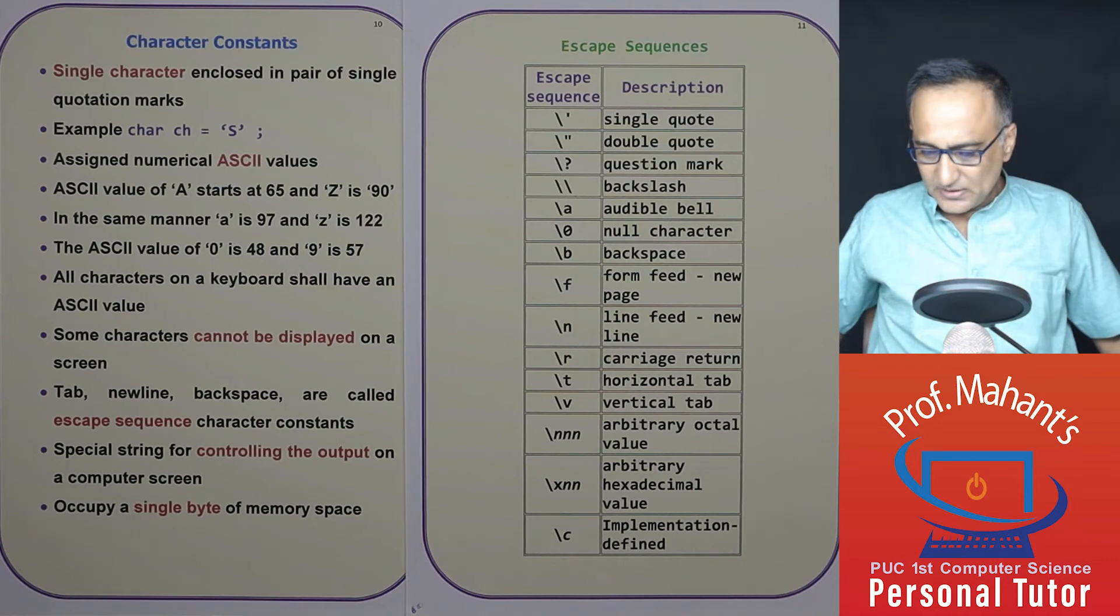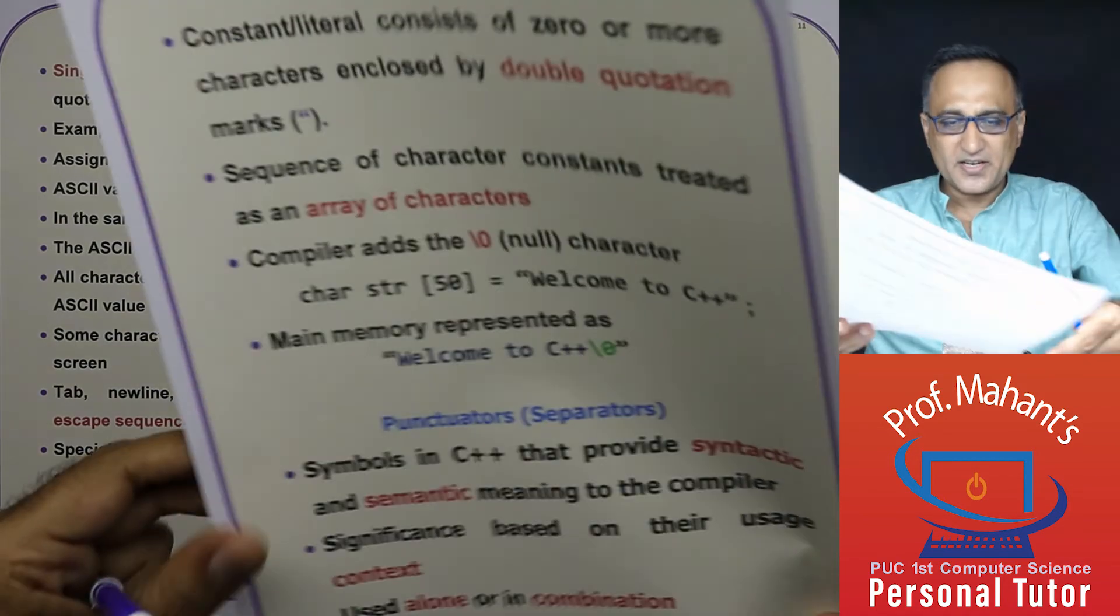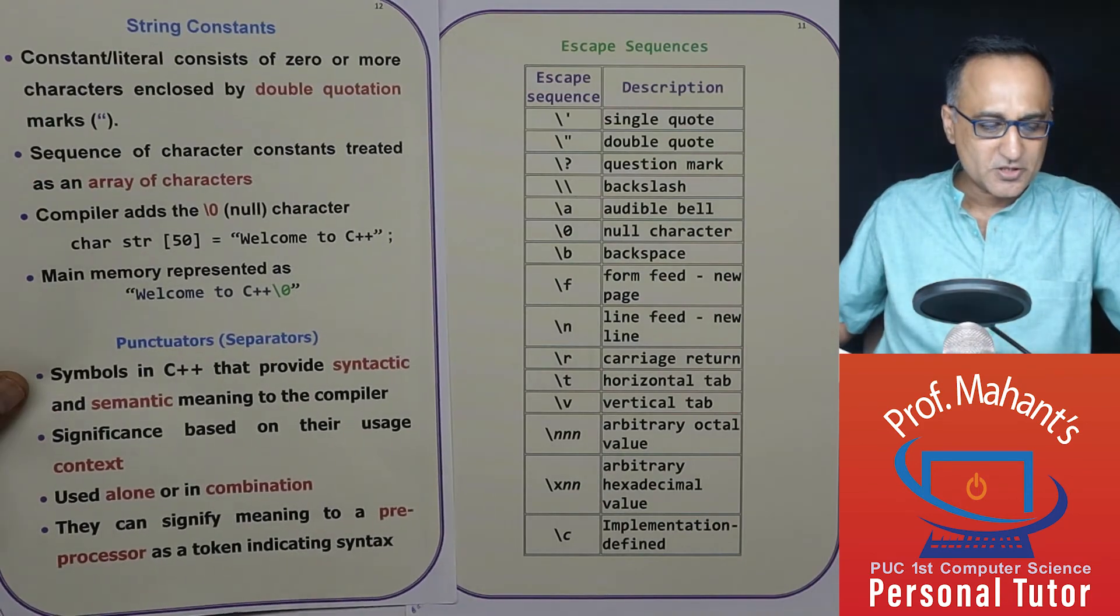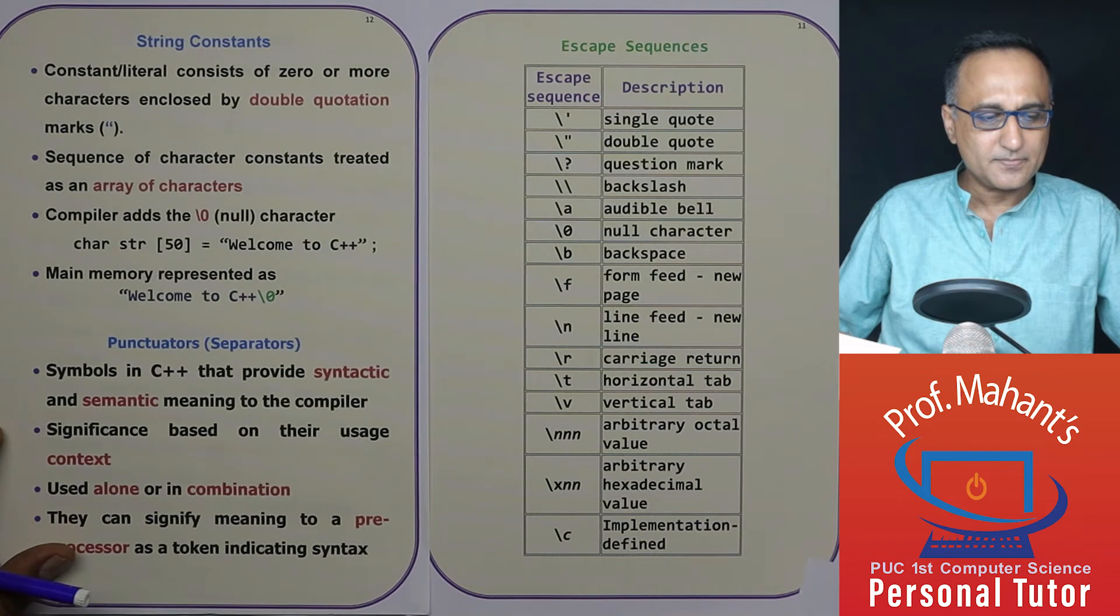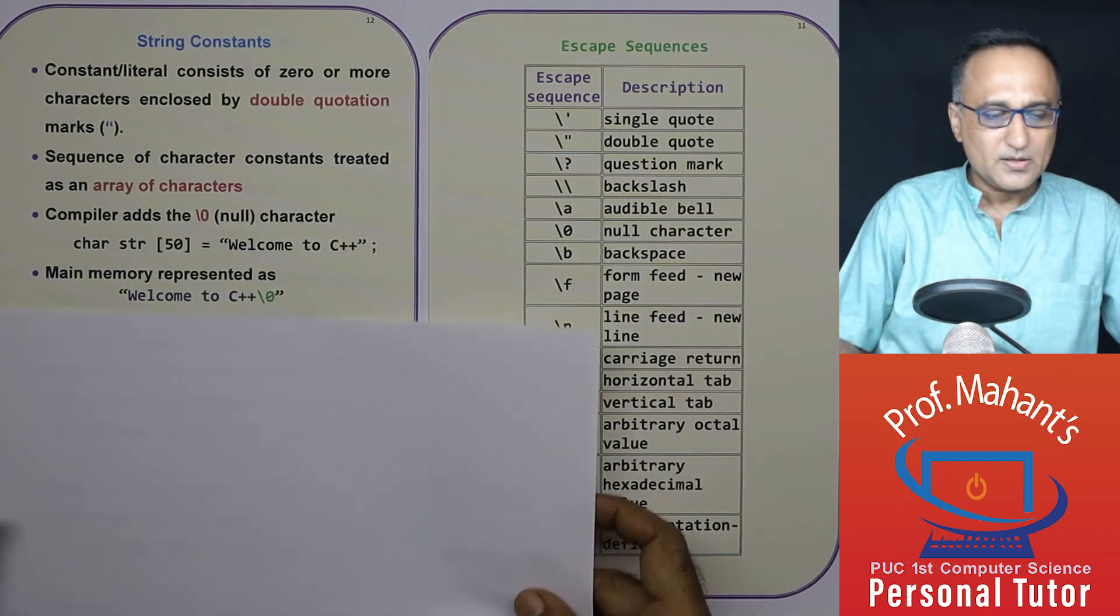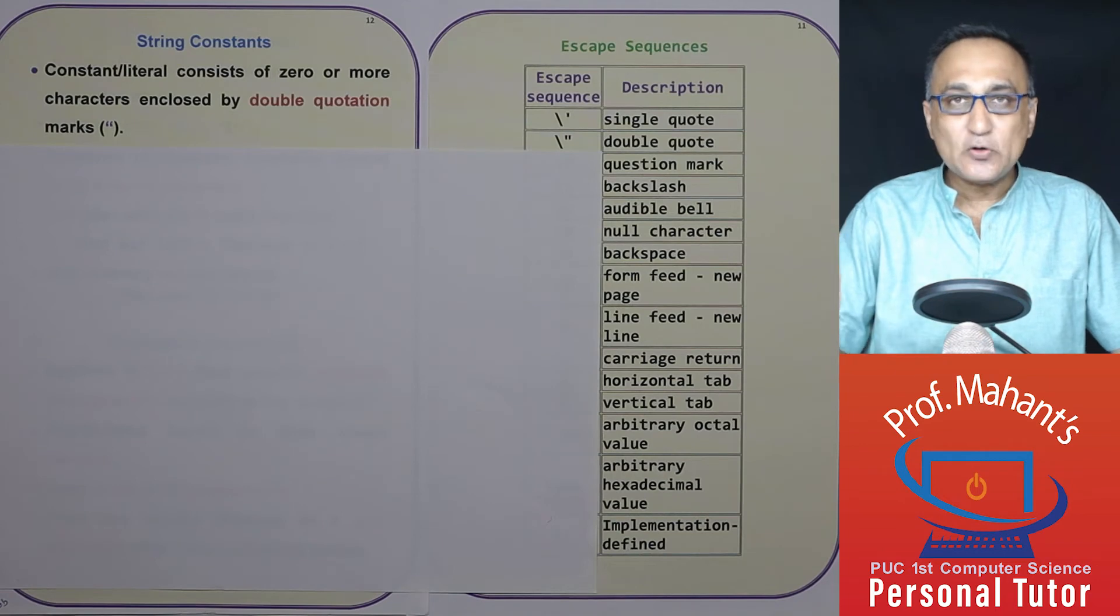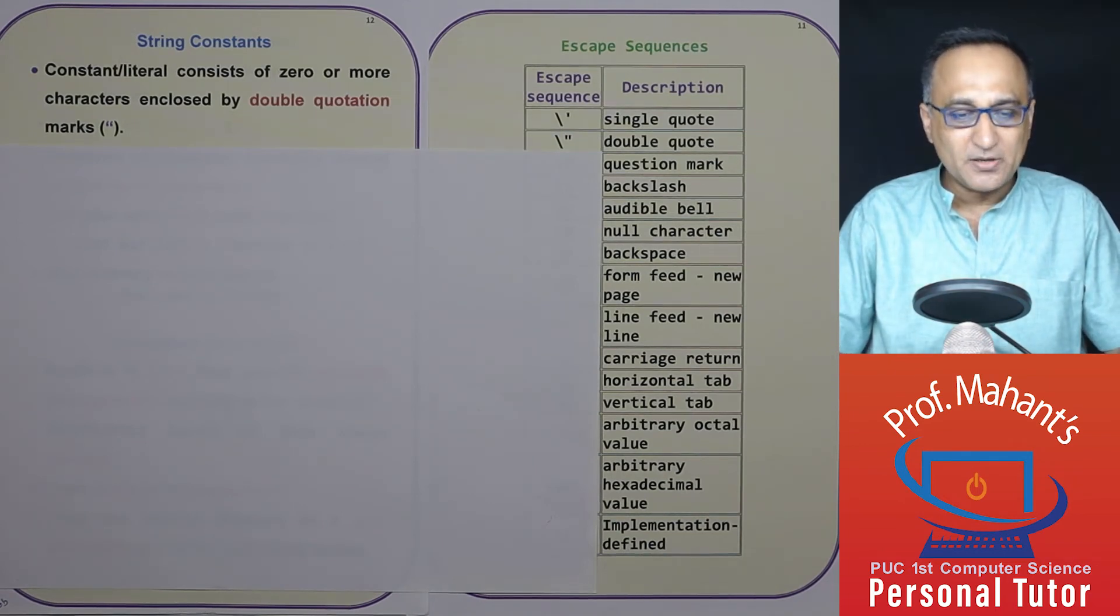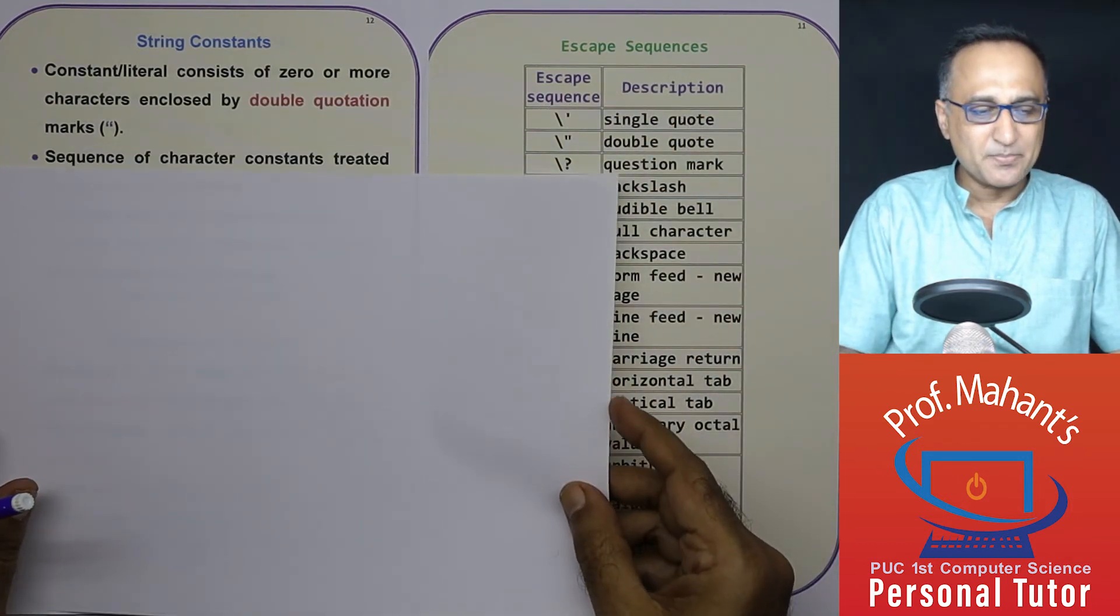Now, let us try to wind up this particular session trying to understand what are string constants. So string constants are a sequence of zero or more characters enclosed in a pair of double quote marks. This is an example of a double quote.